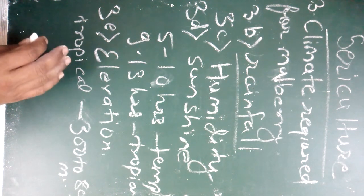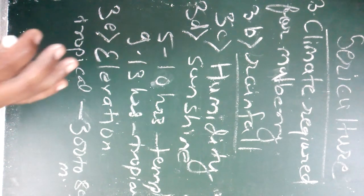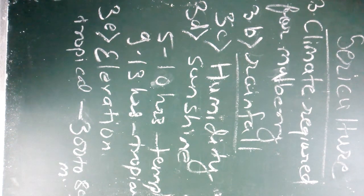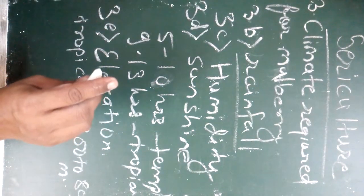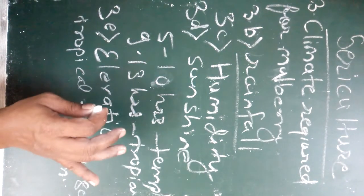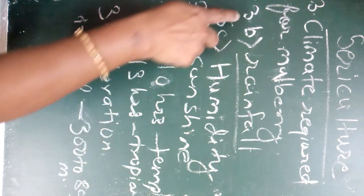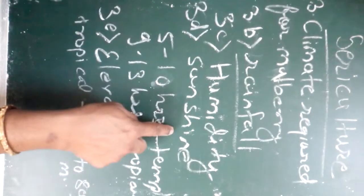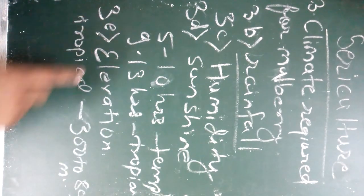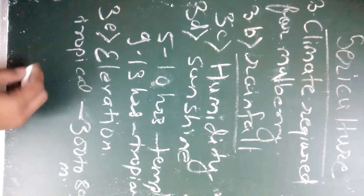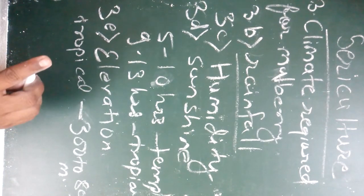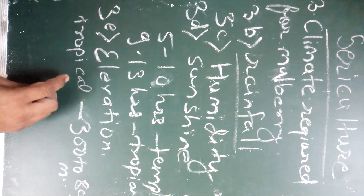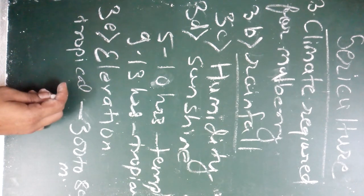To summarize, the climatic conditions discussed are: third A — temperature (discussed in the previous lecture); third B — rainfall; third C — humidity; third D — sunshine; and third E — elevation. These are the five different types of climatic conditions required for proper growth and development of the mulberry plant. Thank you.